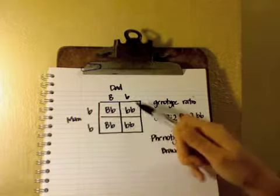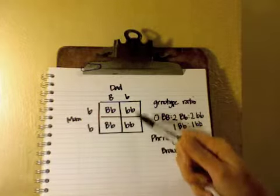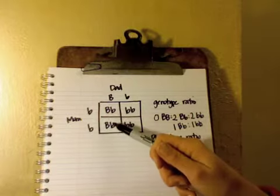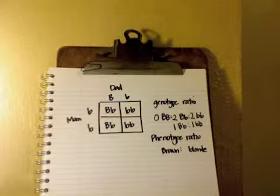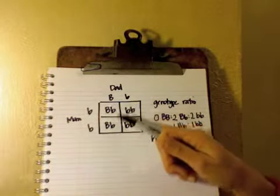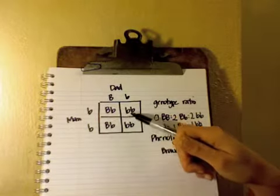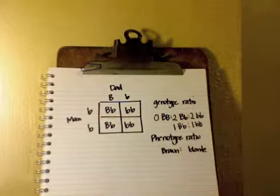Two out of four of the children are little b, little b. Two out of the four children are big B, little b. Or you could say it like a percentage. Fifty percent of the children are big B, little b, and fifty percent of the children are little b, little b.